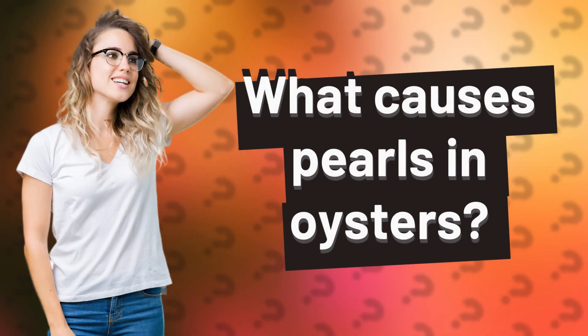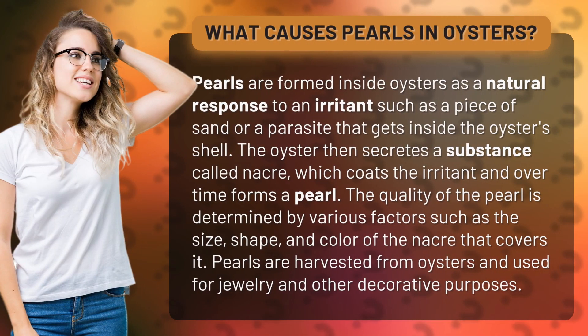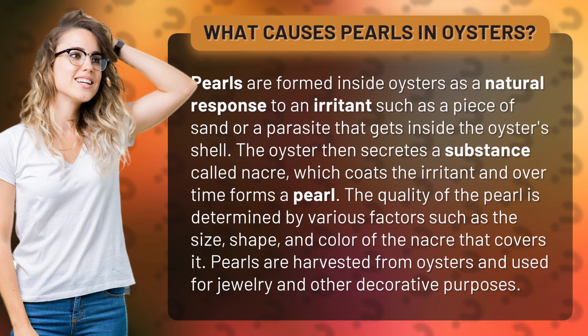What causes pearls in oysters? Pearls are formed inside oysters as a natural response to an irritant such as a piece of sand or a parasite that gets inside the oyster's shell. The oyster then secretes a substance called nacre, which coats the irritant and over time forms a pearl.